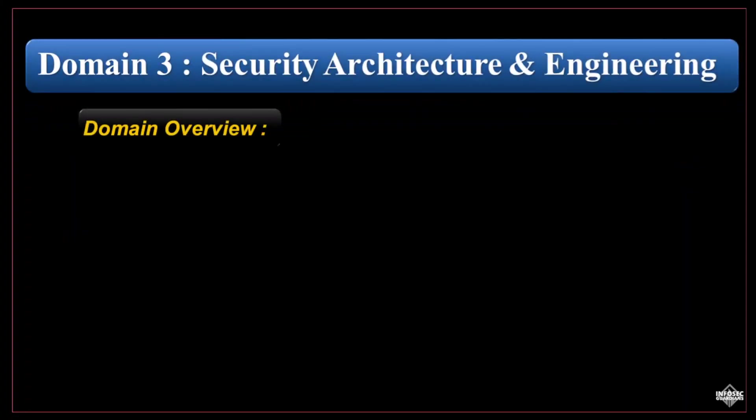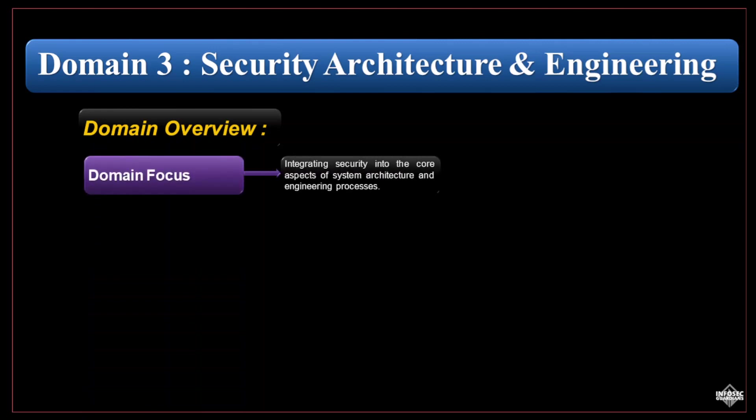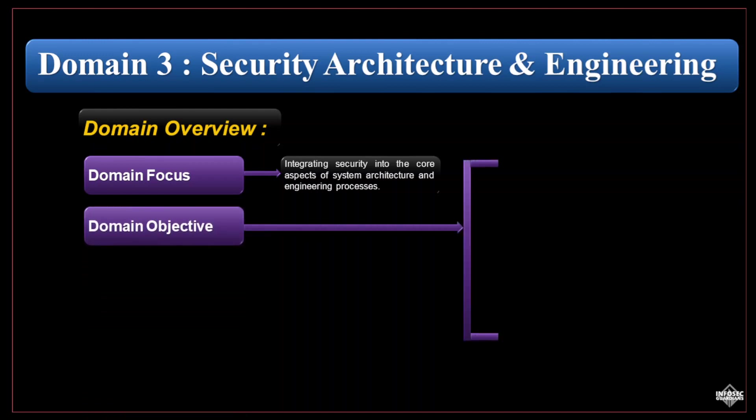Let us have a quick overview of Domain 3. CISSP Domain 3, Security Architecture and Engineering, concentrates on the principles, practices, and methodologies used to design, build, and maintain secure information systems. It emphasizes integrating security into the core aspects of system architecture and engineering processes.